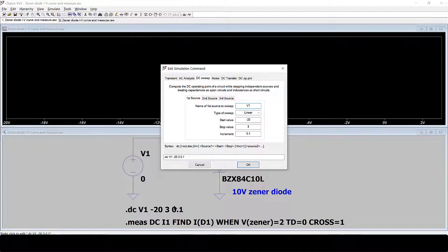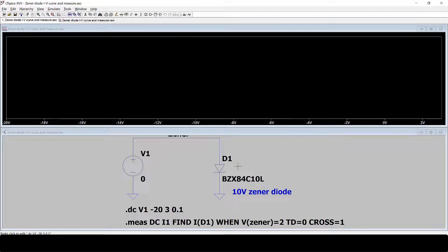You right-click over this syntax, you can see the DC sweep. We sweep V1 linear from minus 20V up to 3V with a step of 0.1V.